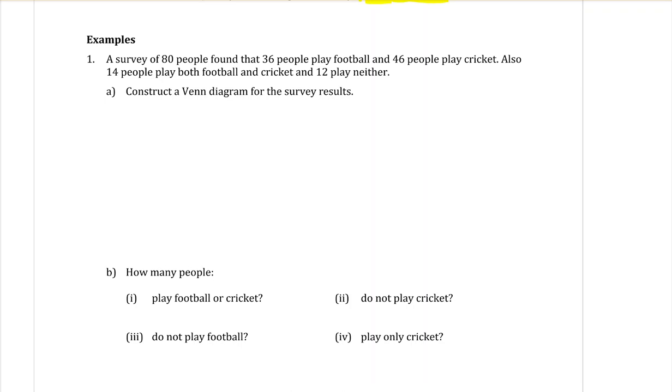Construct a Venn diagram. So Venn diagram, start with a big rectangle, and you want to have two overlapping circles. Sometimes it's actually easier to draw them a bit more like ovals, so you have a bit more of an overlapping section. And the two things that we are comparing here are the people who play football, so that will be my first circle, with the people who play cricket.